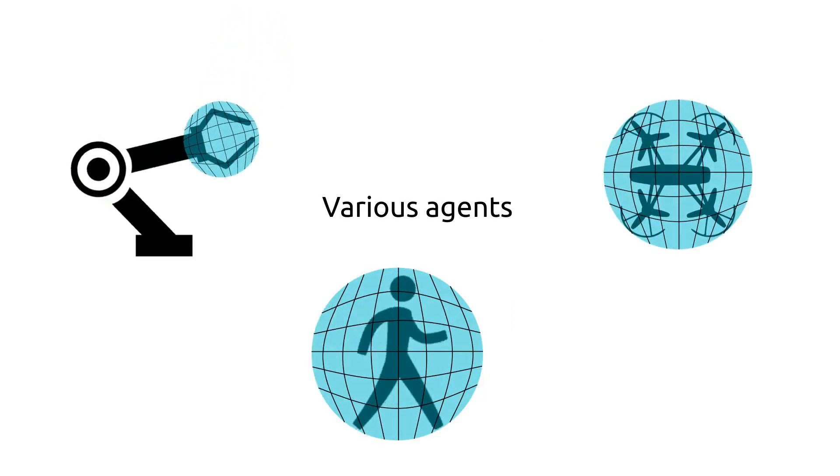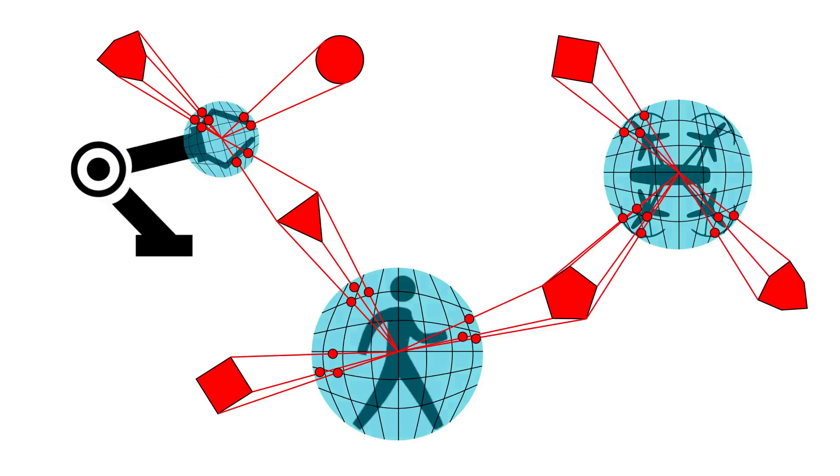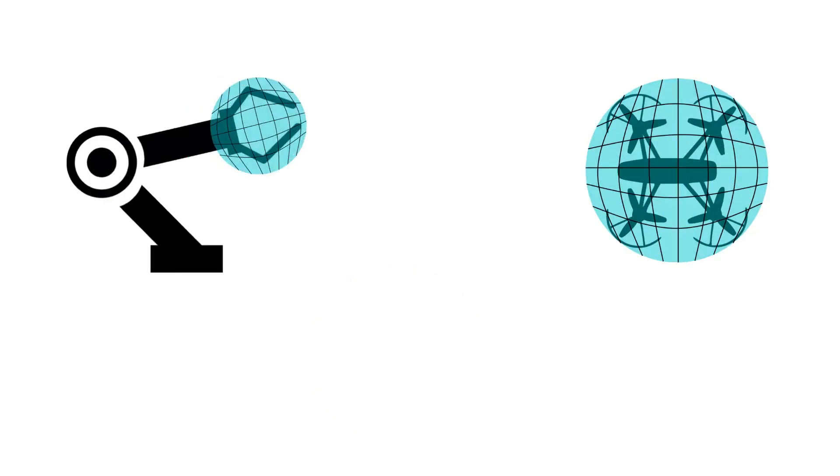The memory is represented as an omnidirectional 2.5D image, with observations of the surrounding continually projected onto the egosphere. While the agent can take on any form, in this work we focus on drones and robot manipulators, both with 6 degrees of freedom control.